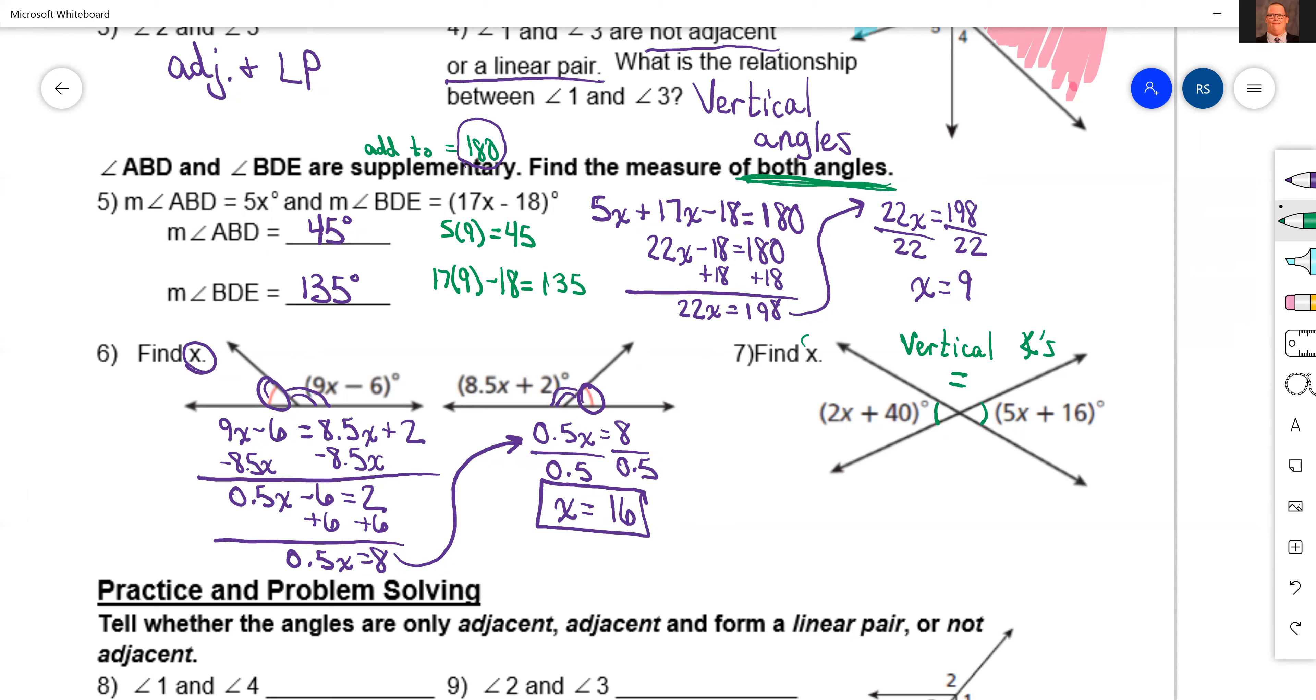So since they want us to find x, what do we need to do to get x? Set them equal to each other. So I'm going to flip it around just to make it easier on us. 5x plus 16 equals 2x plus 40. Subtract 2x from both sides. 5x minus 2x is 3x plus 16 equals 40.